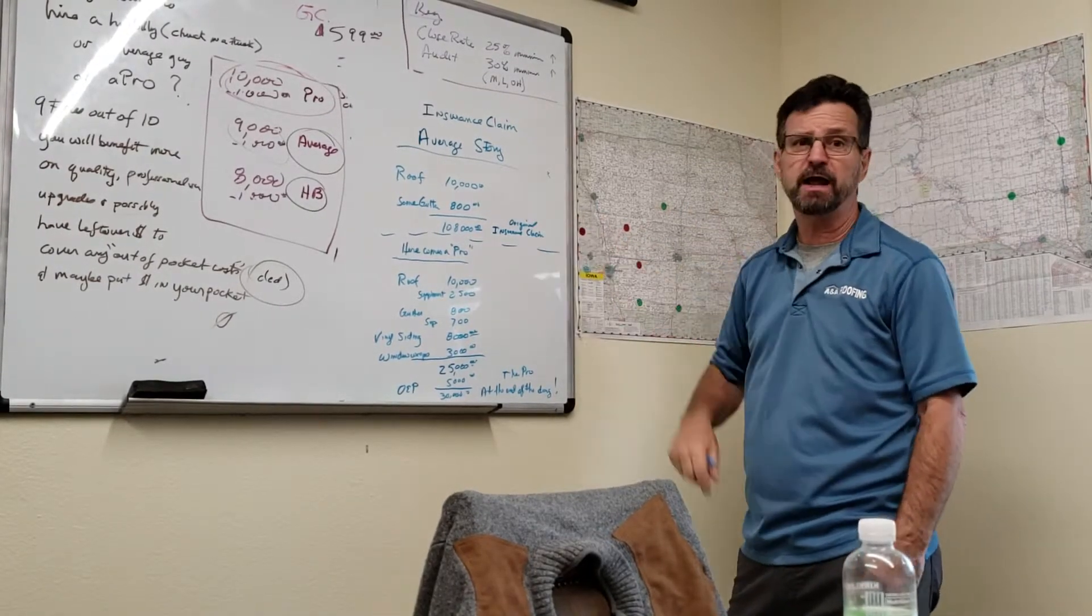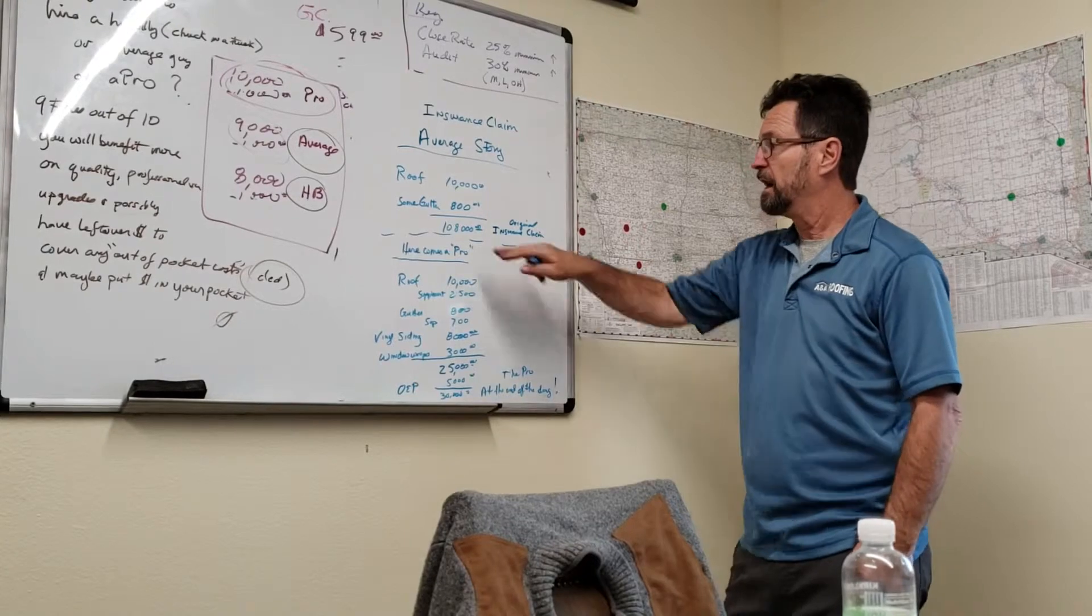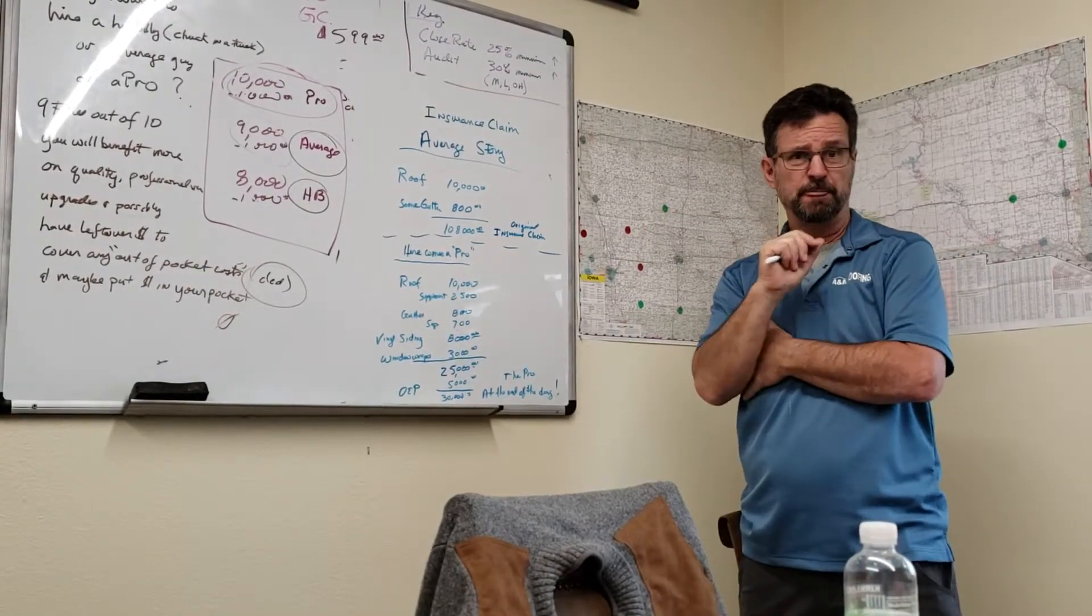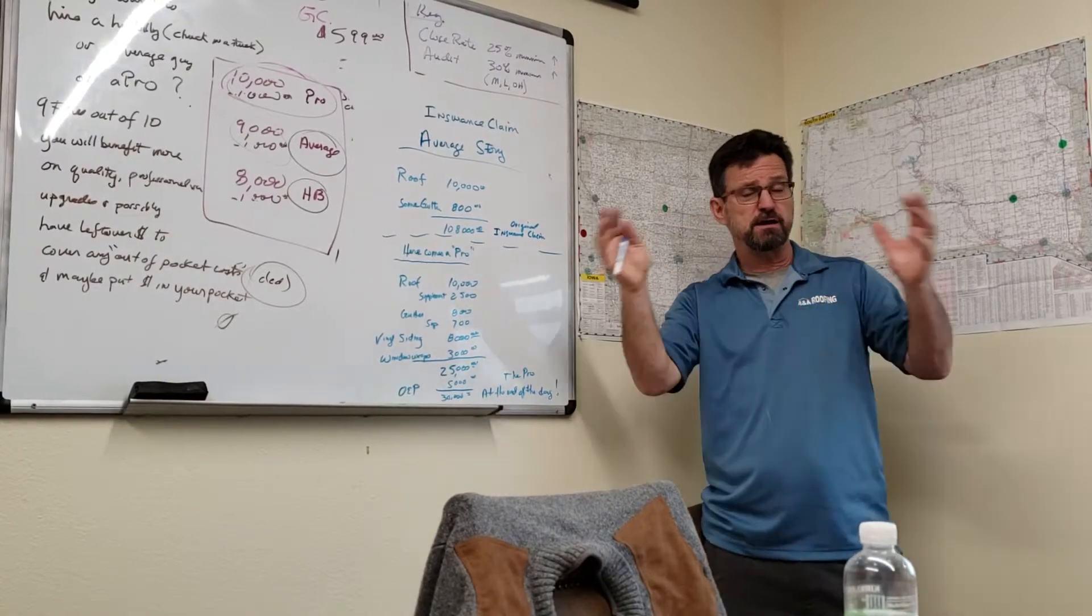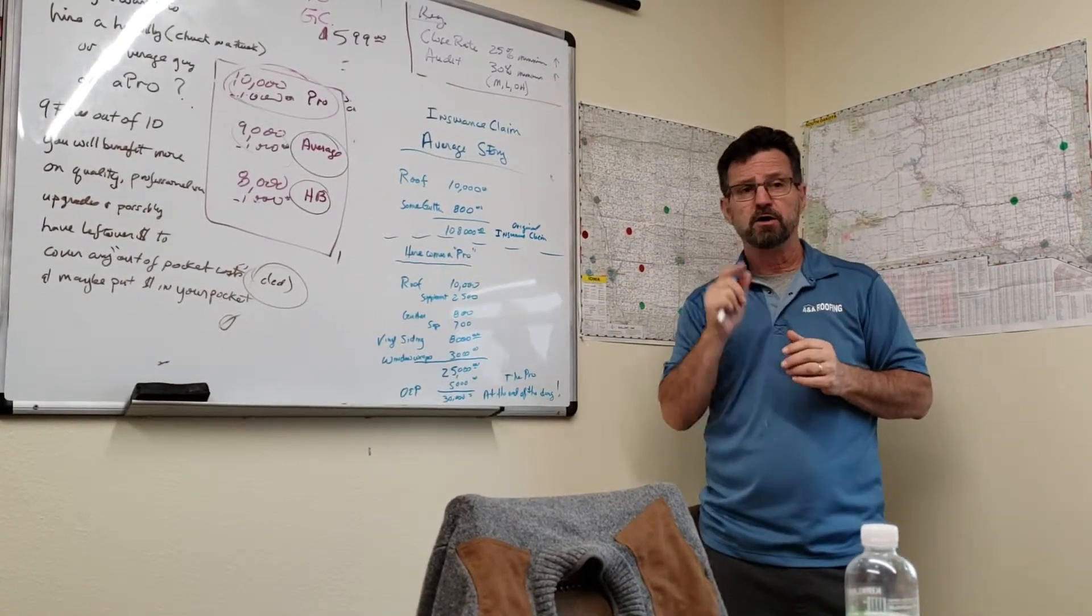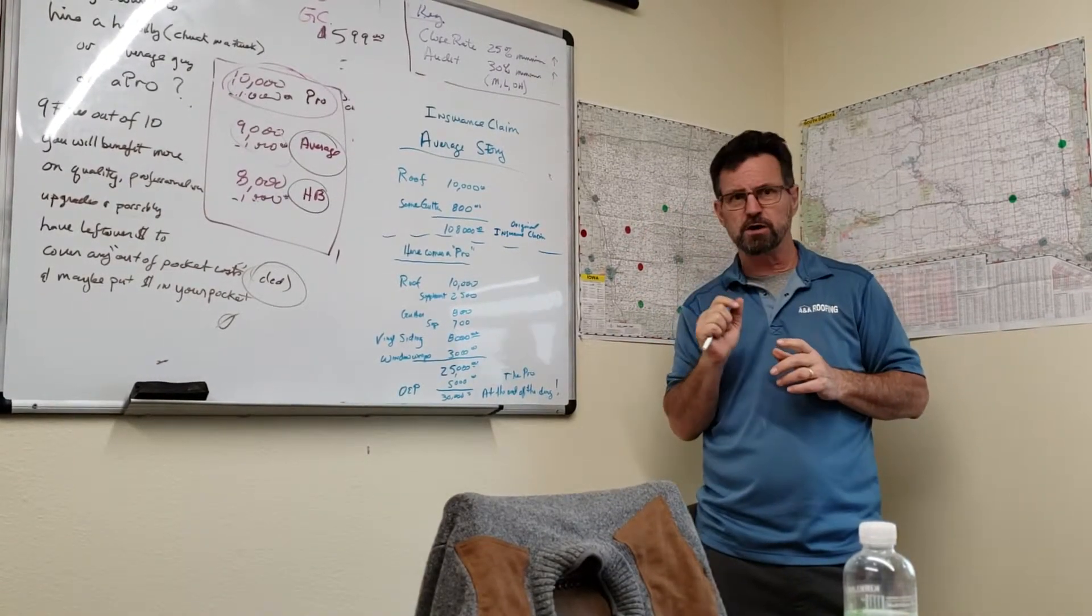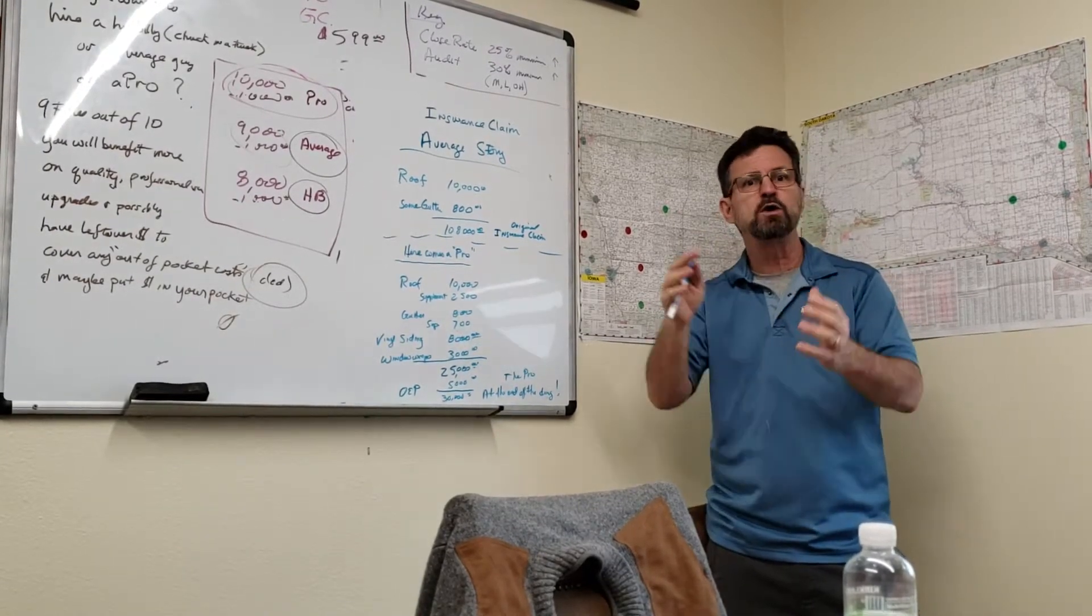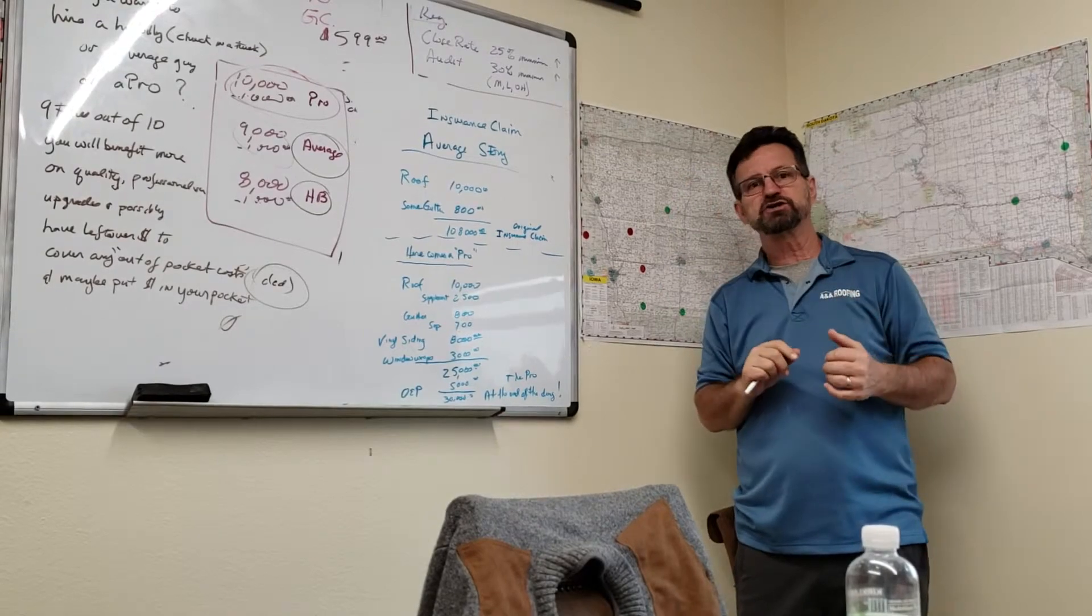I'm going to write up an insurance claim for you for $10,800. I'm going to give you a starter check so you can hire a contractor and get started. Now, when that contractor's done with his work, you send us a bill, say the work's completed, and we'll release the depreciation.